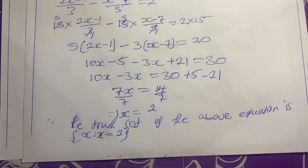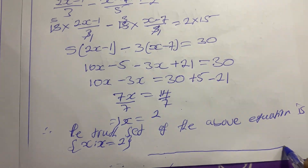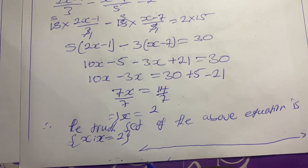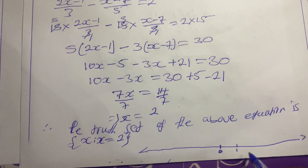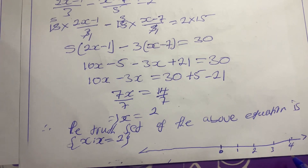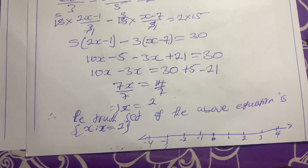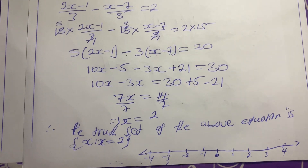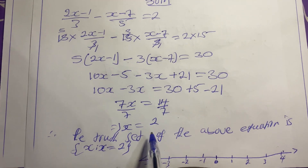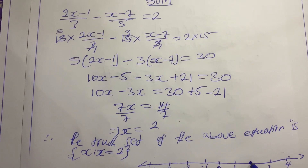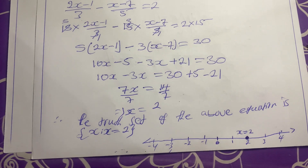To draw the number line, use a pencil not a pen. Draw a straight line, find the middle as zero, mark positive numbers to the right: 1, 2, 3, 4, and negative numbers to the left: −1, −2, −3, −4. Spaces must be equal. Since x equals 2, locate 2 on the number line and mark it, writing x = 2 at that point. That is all for the number line for a linear equation.